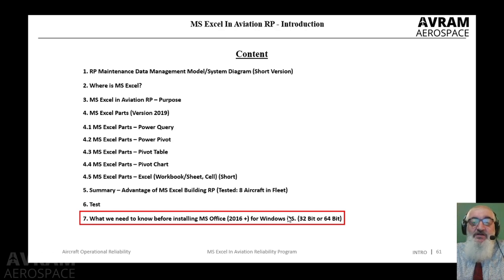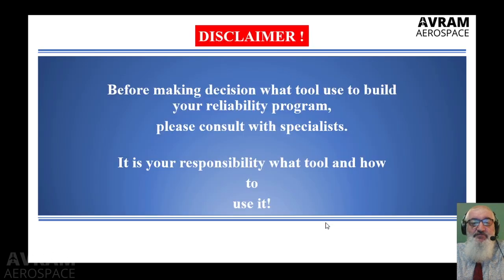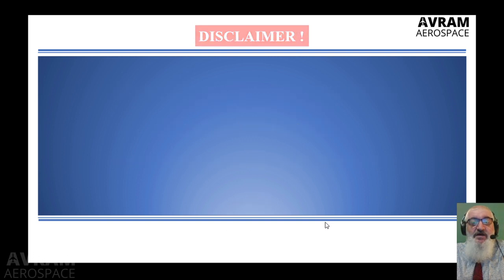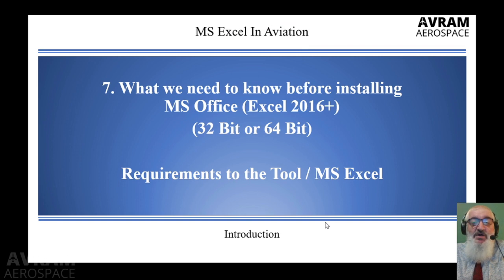The reason is there are two versions of MS Excel 2016 plus: 32-bit and 64-bit, and we definitely need to know the differences between these two versions. Disclaimer before we start Chapter 7: before making a decision on what to use to build your reliability program, please consult with specialists. It is your responsibility what tool to use and how to use it. Now let's start Chapter 7 and try to understand what we need to know before installing MS Office or Excel 2016 plus.